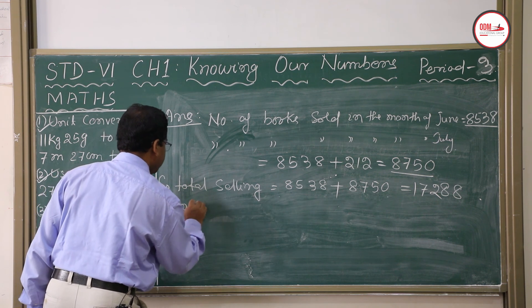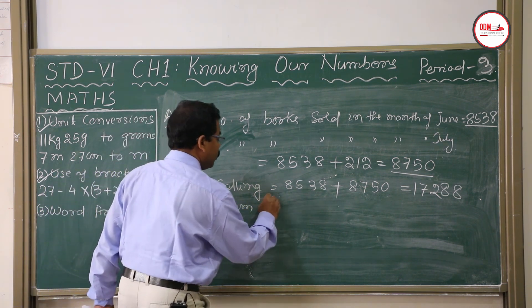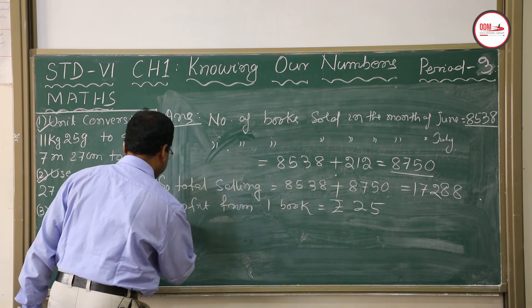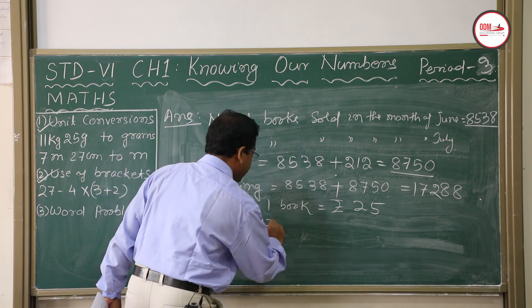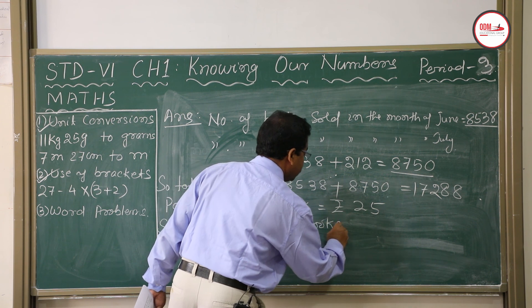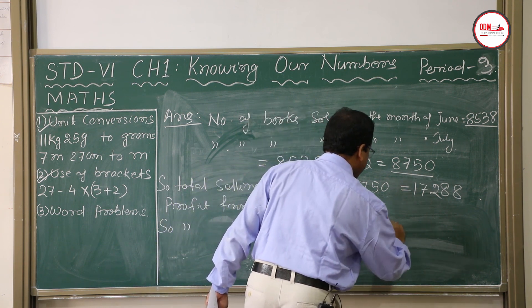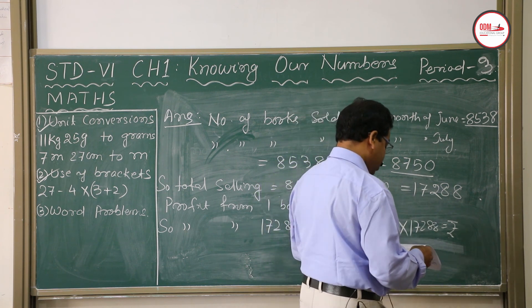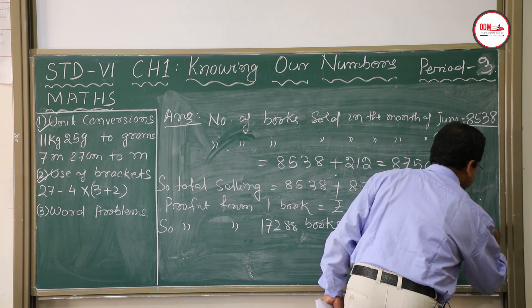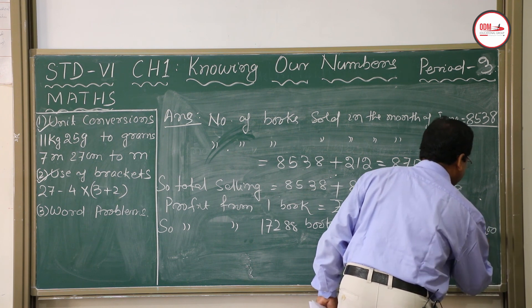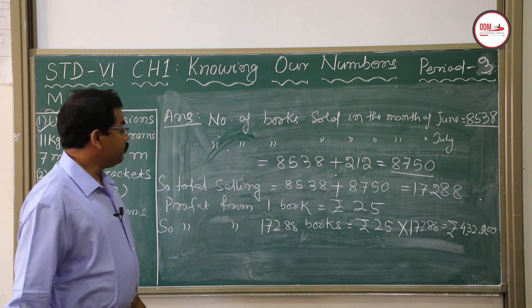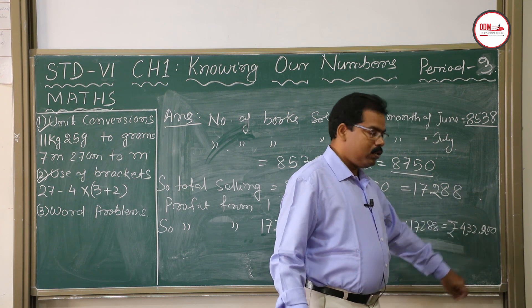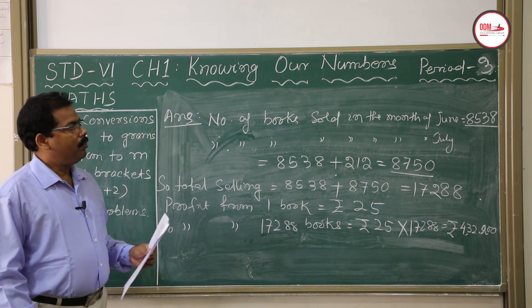Profit from one book: Rs. 25. Profit from 17,288 books = 25 × 17,288 = Rs. 4,32,200. This is the total profit for the two months and the end of period number 3.